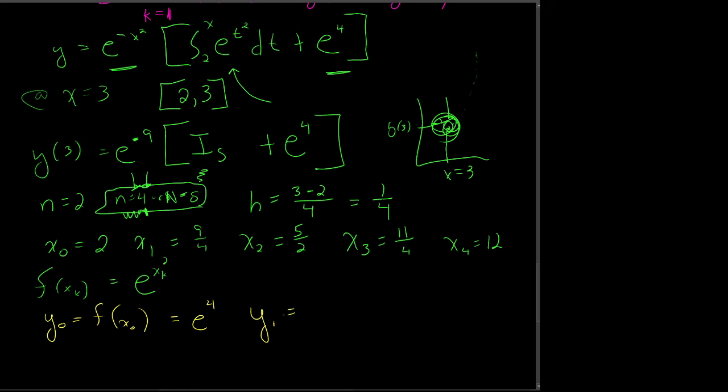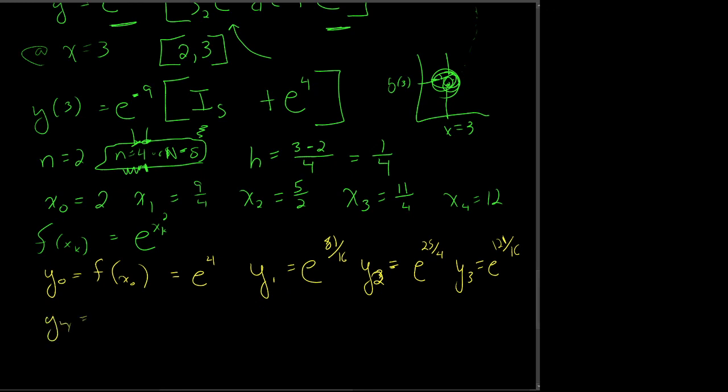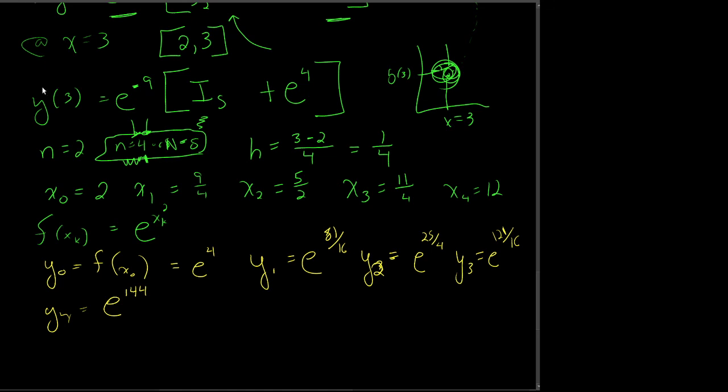y₁ is e to the x₁ or e to the 9 fourths squared, which is 81 sixteenths. And look, these are numbers now, ugly numbers but numbers. y₂ is equal to e to the 25 fourths. y₃ is e to the 121 sixteenths. And y₄ is e to the 144th. We have walked our way up and we have our y values coming through.